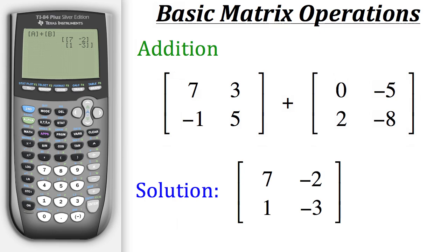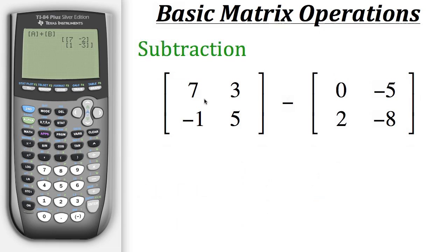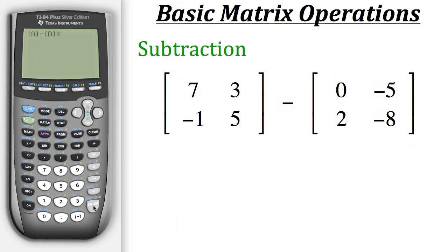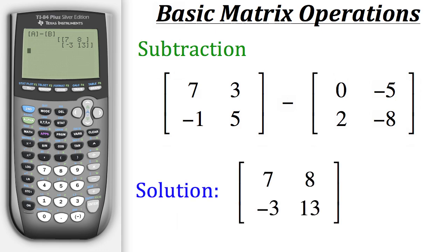Now let's try subtraction. Instead of matrix A plus matrix B, we do matrix A minus matrix B. We pull up matrix A, hit minus, then pull up matrix B and hit enter. The result is another two by two matrix with first row 7 and 8, and second row negative 3 and 13.